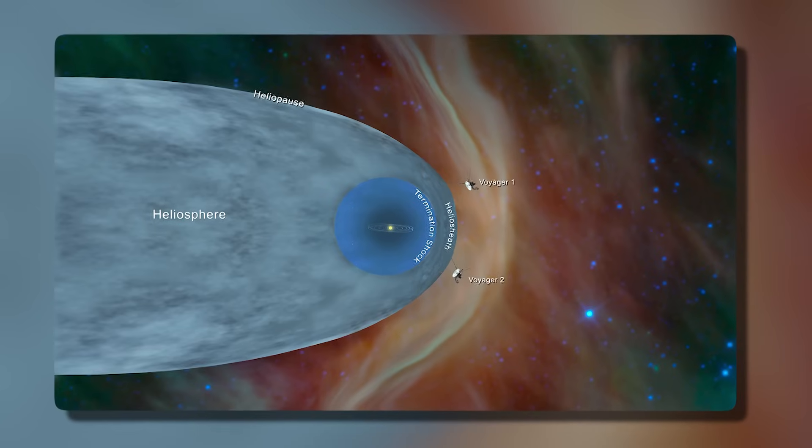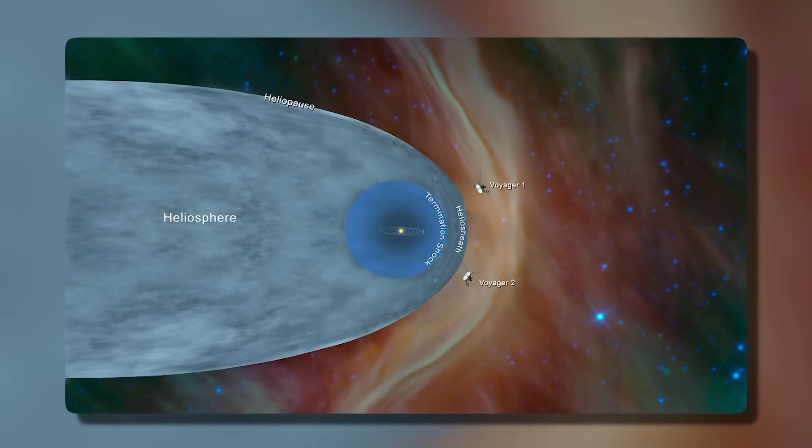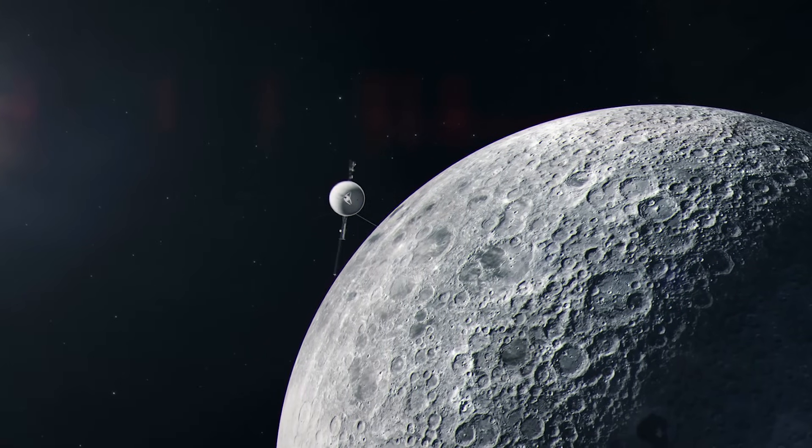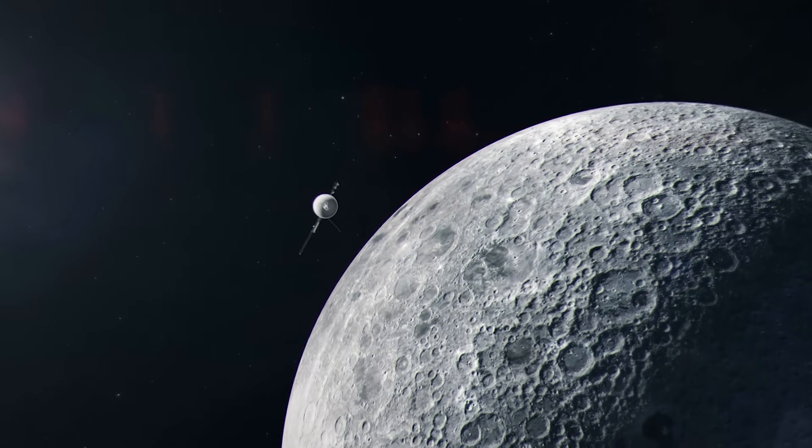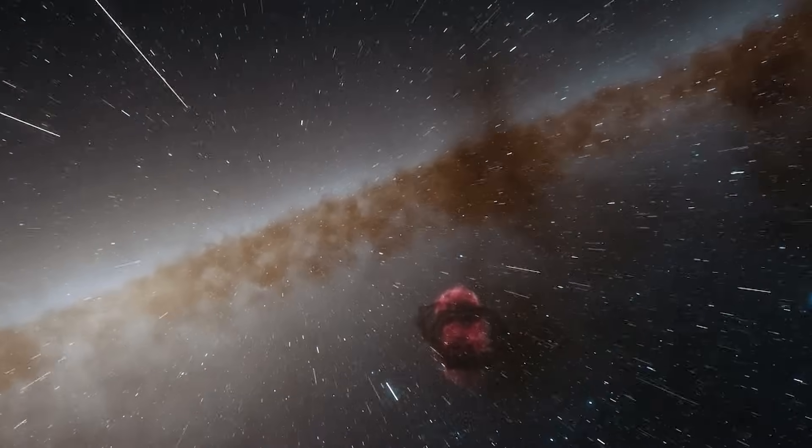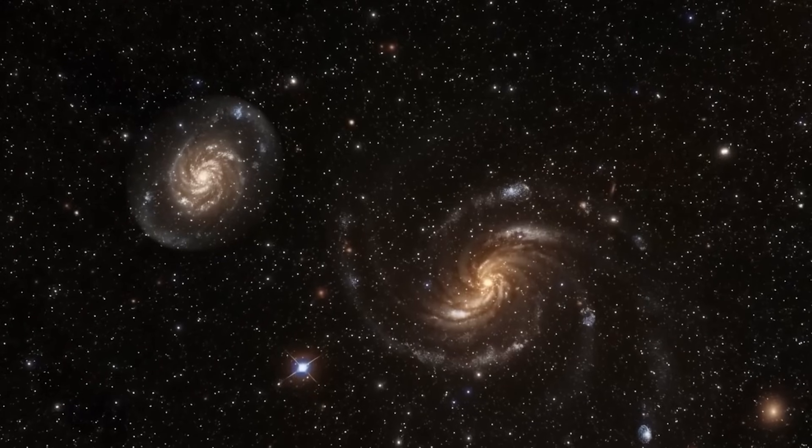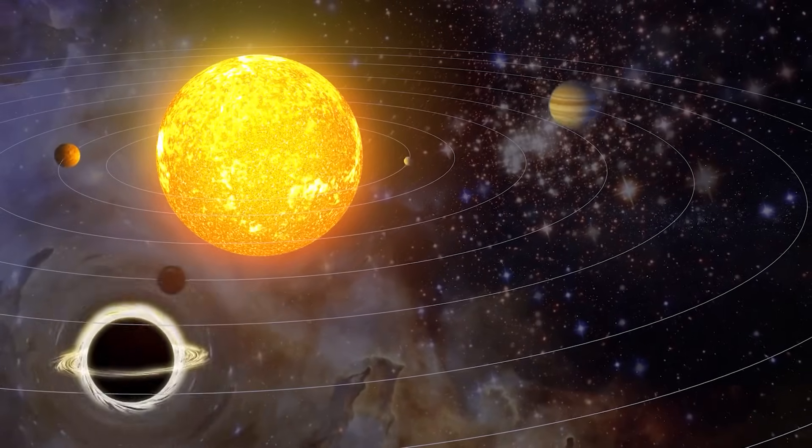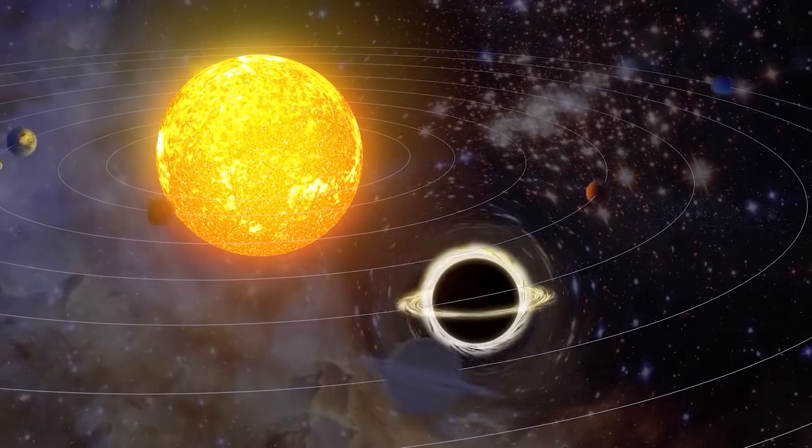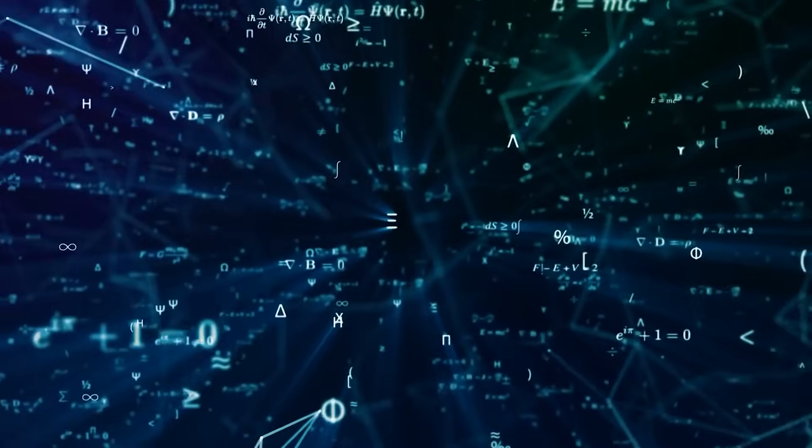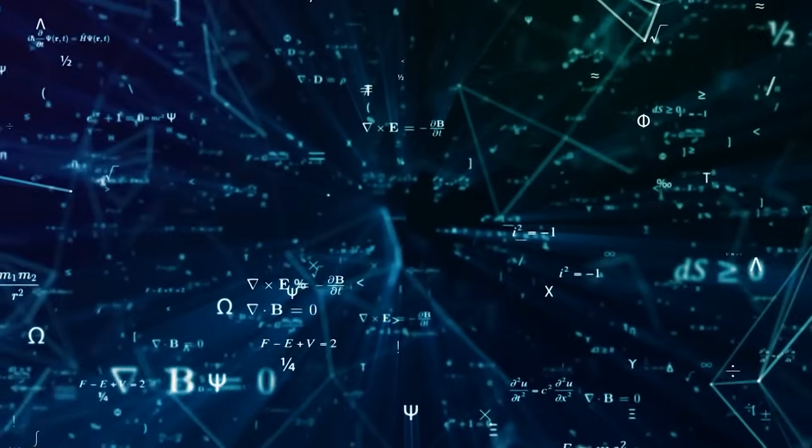Voyager 1, now beyond the heliosphere and beyond comprehension, is alone in a way nothing else made by humans has ever been. And yet, for those 43 minutes, it may not have been alone at all. The brief disturbance, the gravitational whisper, the subroutine activation, all of it adds up to a singular anomaly that will be studied, reanalyzed, debated, and doubted for decades to come. But it happened. The data is clear and the mystery undeniable.